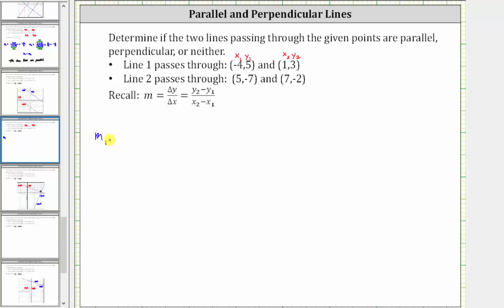m sub one is equal to the quantity y sub two minus y sub one, which is three minus five, divided by the quantity x sub two minus x sub one, which is one minus negative four.